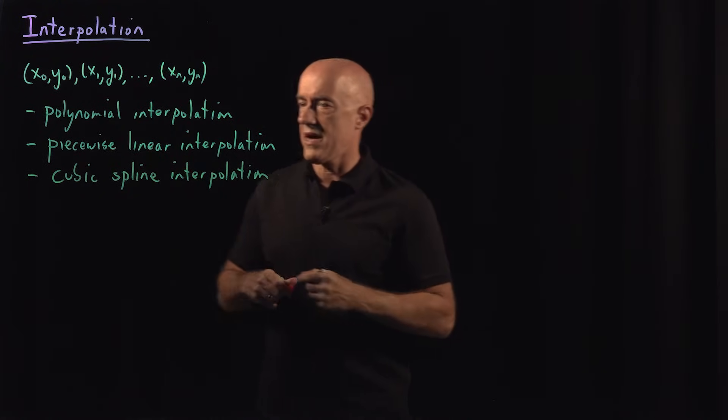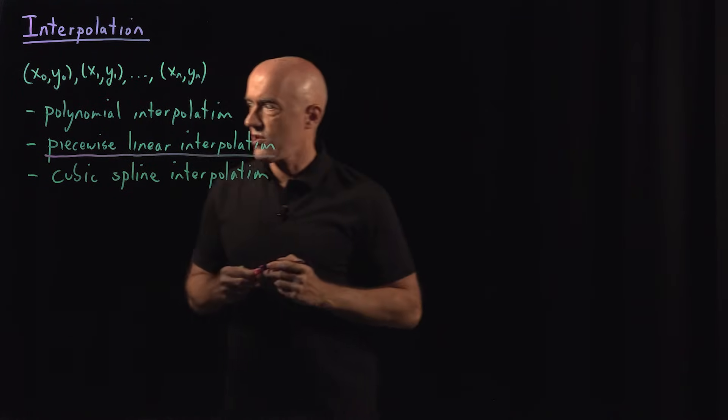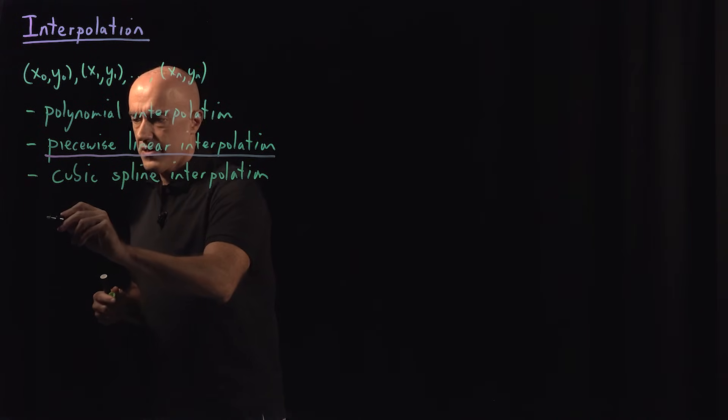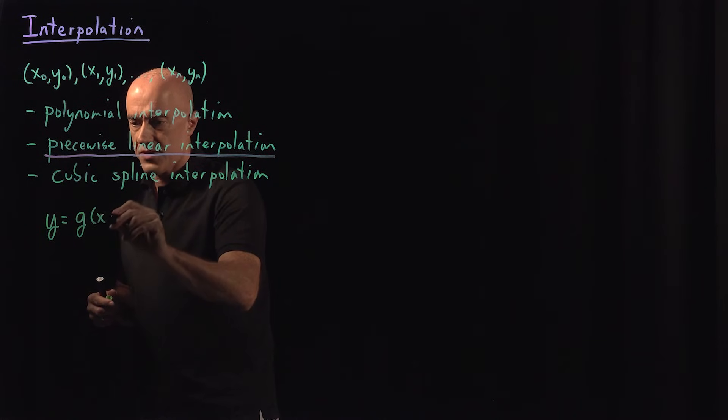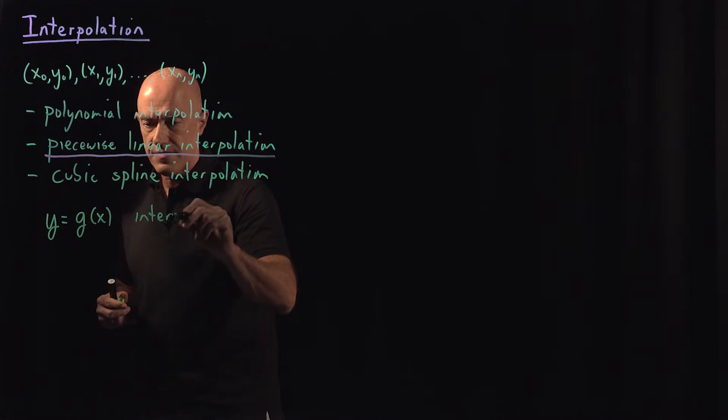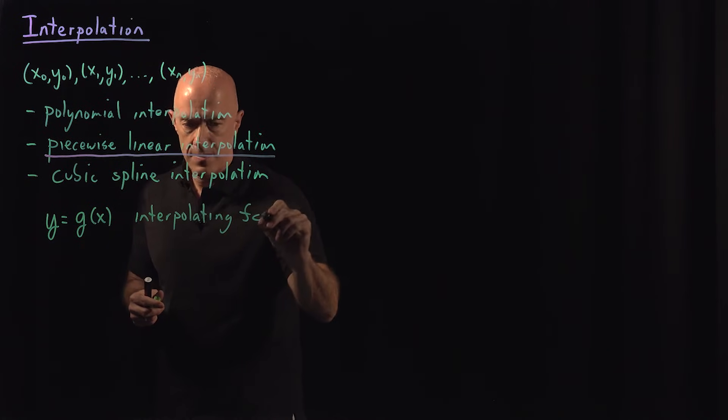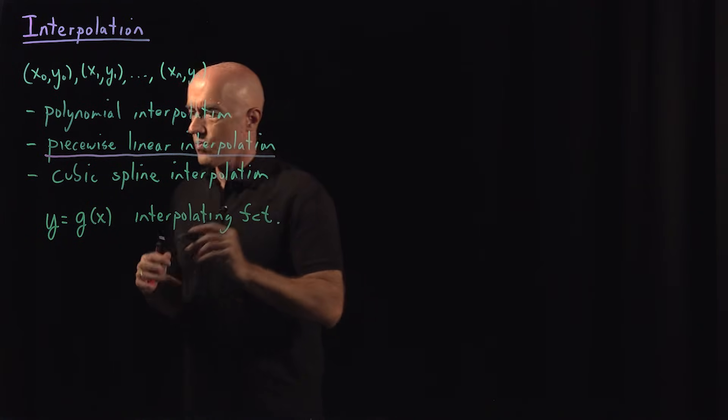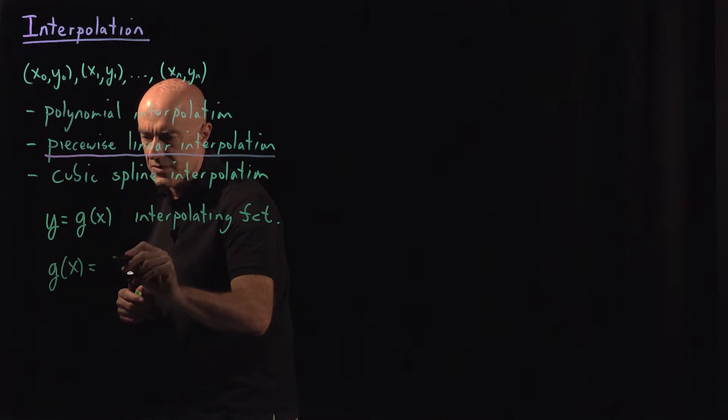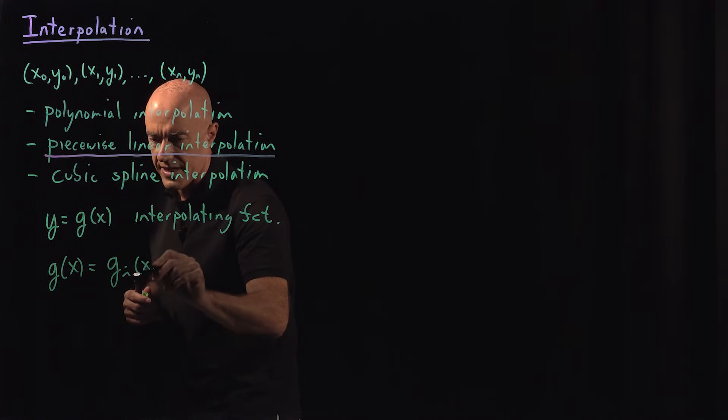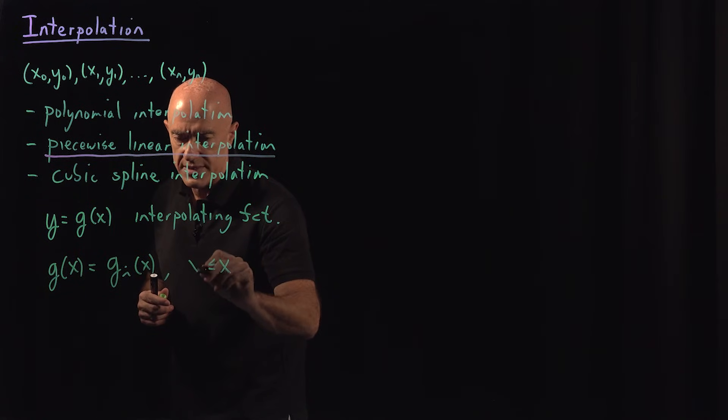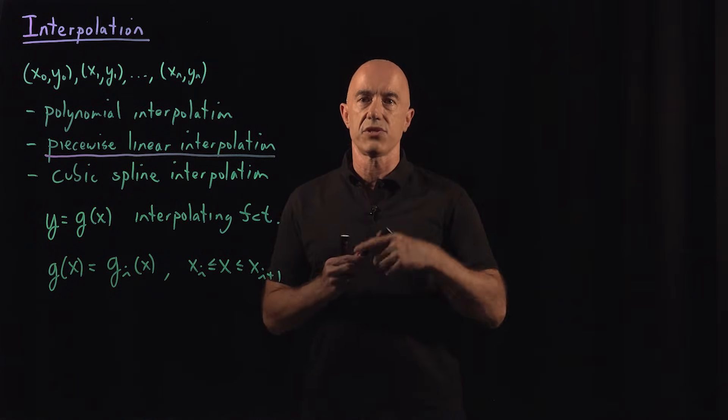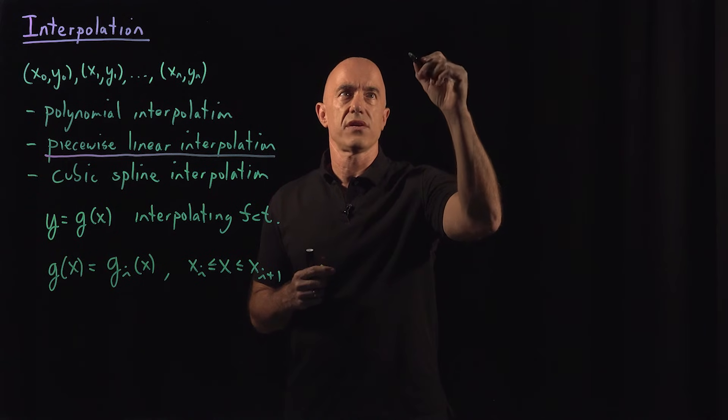So here then let's talk about piecewise linear interpolation. So we have some general interpolating function. I'll call that g of x. So y then equals g of x. This is what we call our interpolating function. But the interpolating function consists of piecewise linear functions. So we have g of x then is equal to some linear function, which I'll call g i of x. When x then is between the points x i and x i plus 1. So those are the piecewise linear functions. I can draw a graph so maybe it will be easier to see.